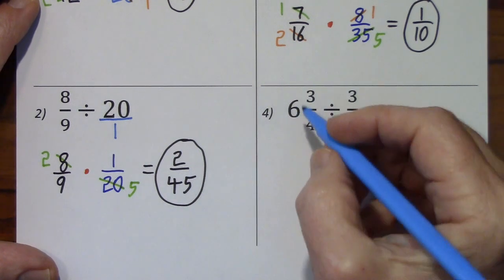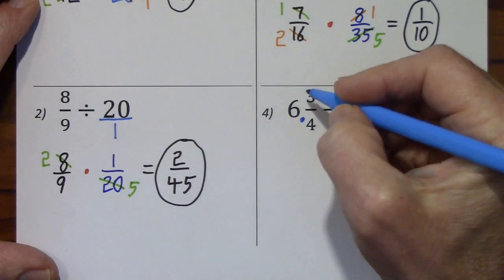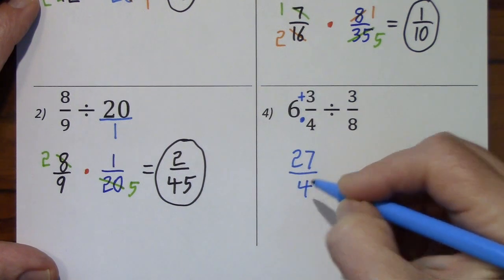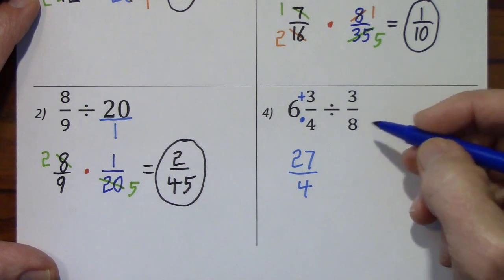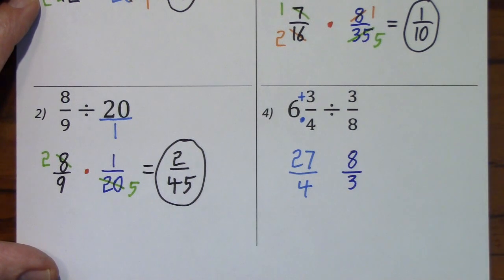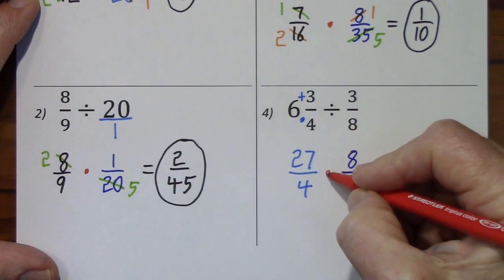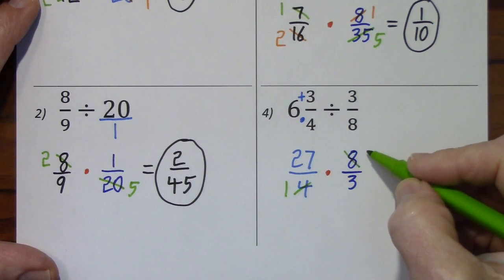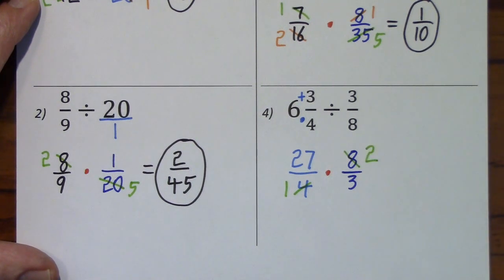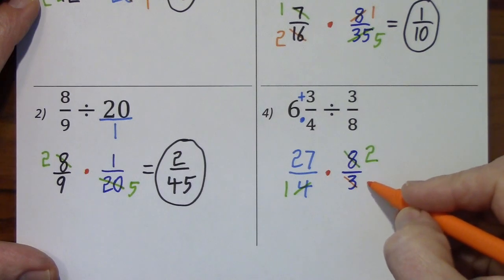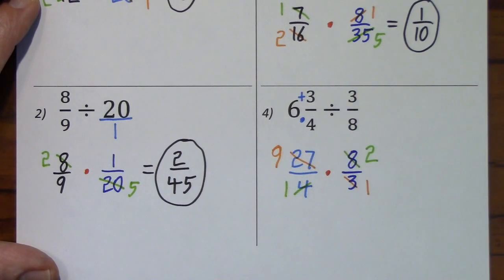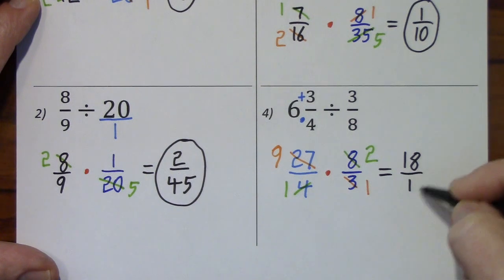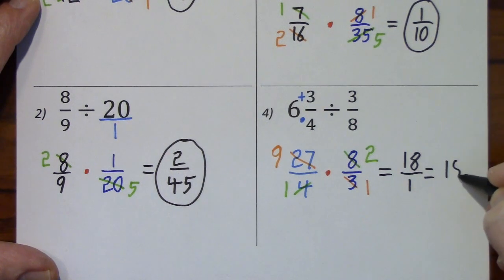Looking at number 4, we'll change this mixed number to an improper fraction. 4 times 6 is 24. 24 plus 3 is 27 over 4. We'll take the reciprocal of 3 eighths, which is 8 thirds. We'll change division to multiplication. Now we can simplify. Divide by 4. Divide by 4. Divide by 3. Divide by 3. This gives us 18 over 1, but that's not considered simplified — you need to write this as 18.